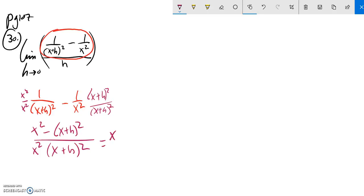So then we'll keep going from here. x squared minus that. I'm going to multiply that out. So that would be minus x squared minus 2xh, plus h squared, all over x squared times (x + h) squared.